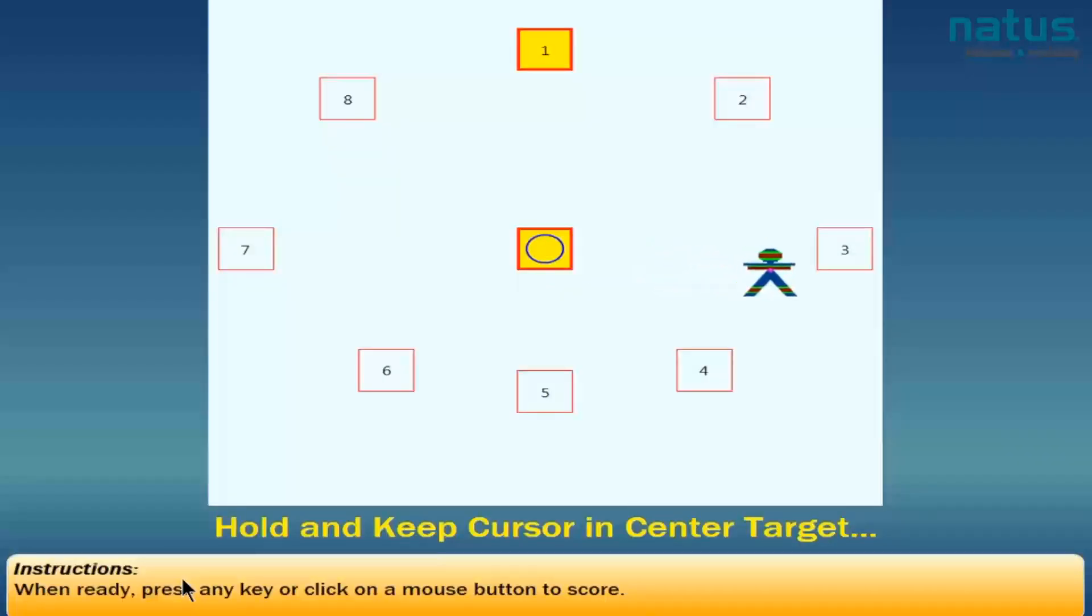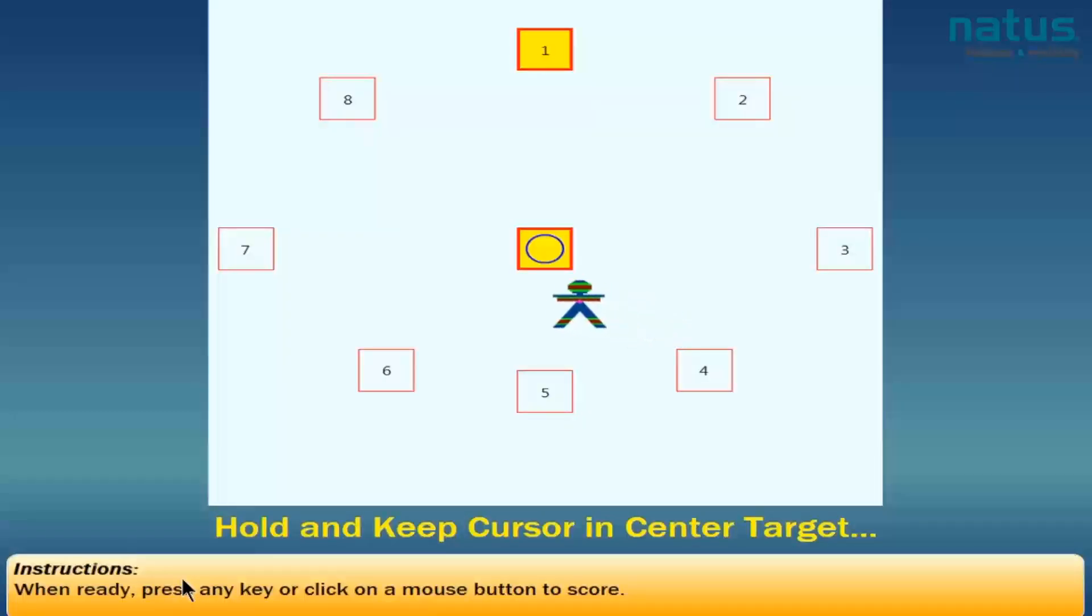It's very important to make sure that your patient understands they do not have to get all the way out to each target. In fact, the targets are set at 100% of the patient's theoretical limit of stability, meaning if they are actually in the target, they should be just on the edge of falling. Oftentimes, what a patient will do is they will try so hard to get into the target that they will overextend their balance, causing themselves to lose balance before the trial ends. You always want to tell the patient, only go as far as you can and hold that position. You don't want them to be overshooting their limit and then taking a step and losing their balance.